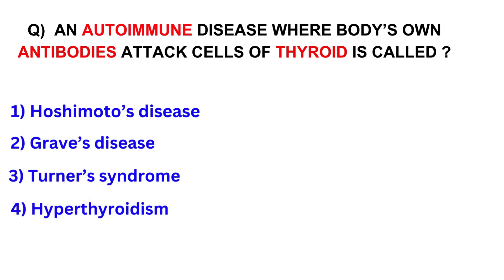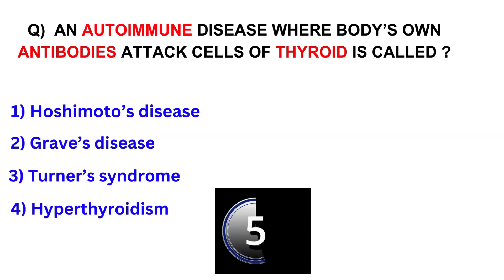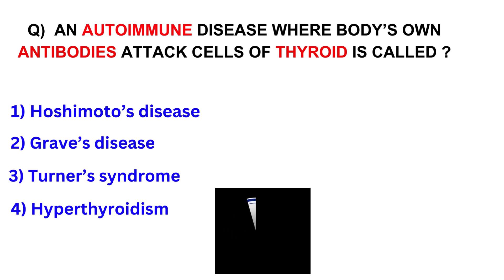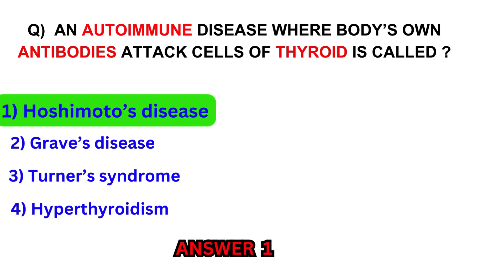An autoimmune disease where the body's own antibodies attack cells of the thyroid is called? Hashimoto's disease, Graves' disease, Turner syndrome, or hyperthyroidism. Answer: Hashimoto's disease.